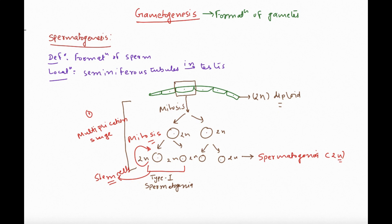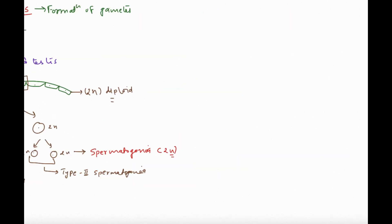The cells that act as stem cells — dividing only mitotically to maintain their numbers — are called Type 1 spermatogonia, or spermatogonial stem cells. The other spermatogonia that will proceed to form sperm and undergo meiosis are called Type 2 spermatogonia.